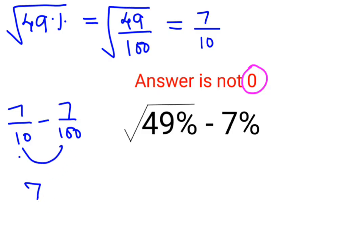So at this point, I can convert this 10 as 100 by multiplying it with 10. And similarly, the same operation should be done in the numerator.